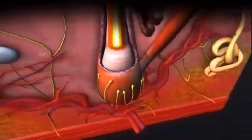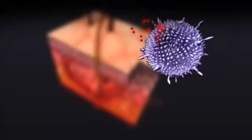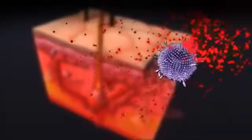Psoriasis results from a problem with a type of white blood cell in the immune system called a T-cell. T-cells normally detect and fight off foreign substances. In psoriasis, T-cells attack healthy skin cells and trigger an immune response.